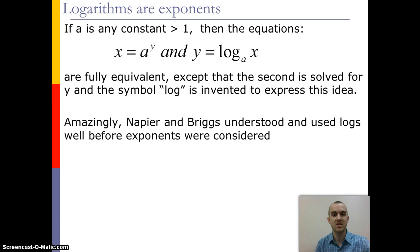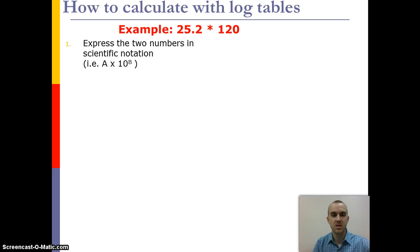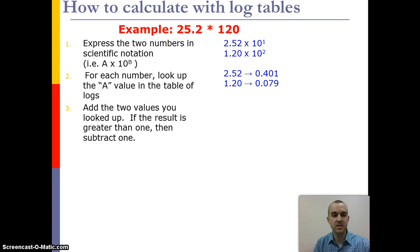If you're going to calculate using a log table, say we've got 25.2 times 120. First, we'd rewrite them into scientific notation — A times 10 to the B. So we have 2.52 times 10 to the 1, and 1.2 times 10 to the 2. First we'd look up the A value in the table of logs — 2.52 is about 0.401, and 1.2 is about 0.079. The next step is to add those two looked-up values together.